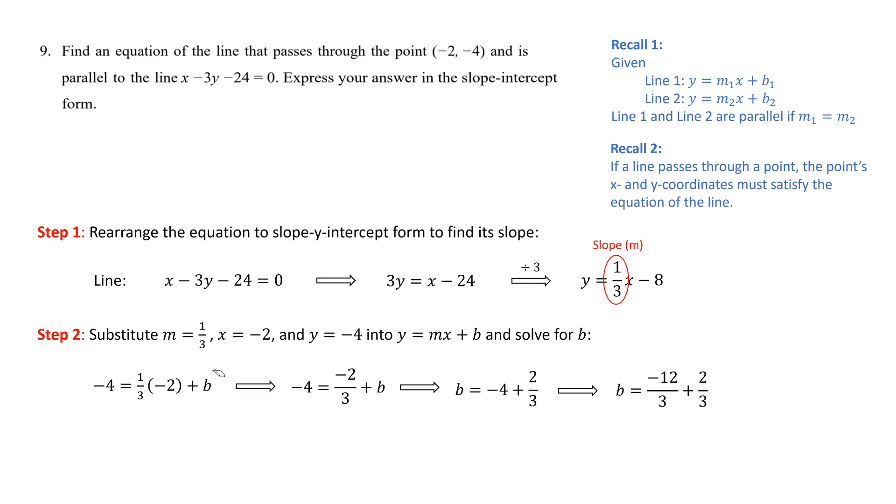Now that the denominators are the same, we can combine the numerators and we get b to be negative 10 over 3, which is the y-intercept of the line we're looking for.